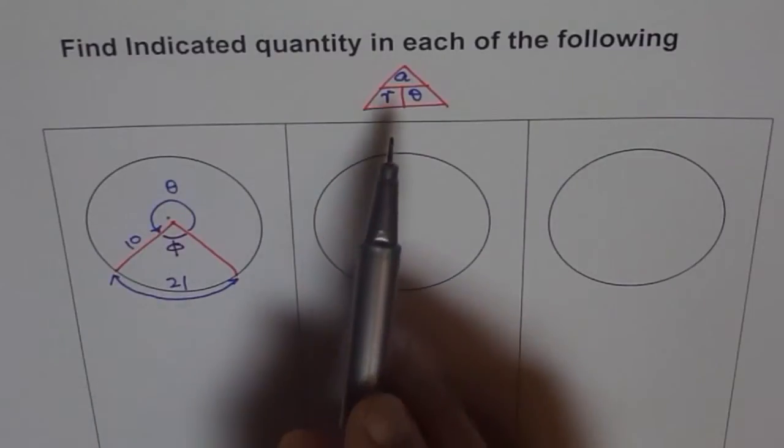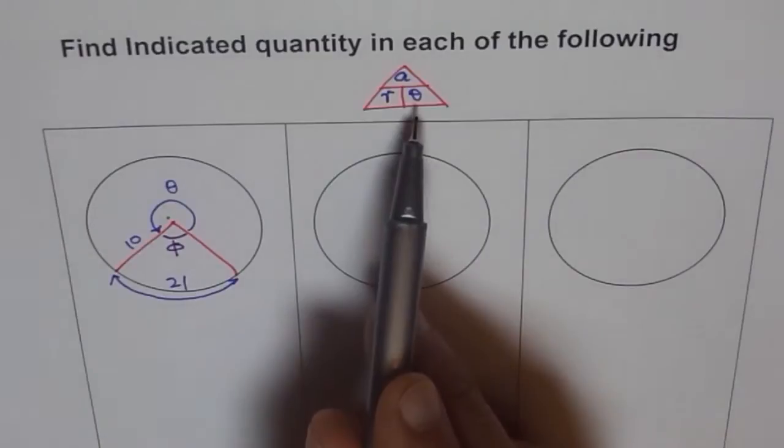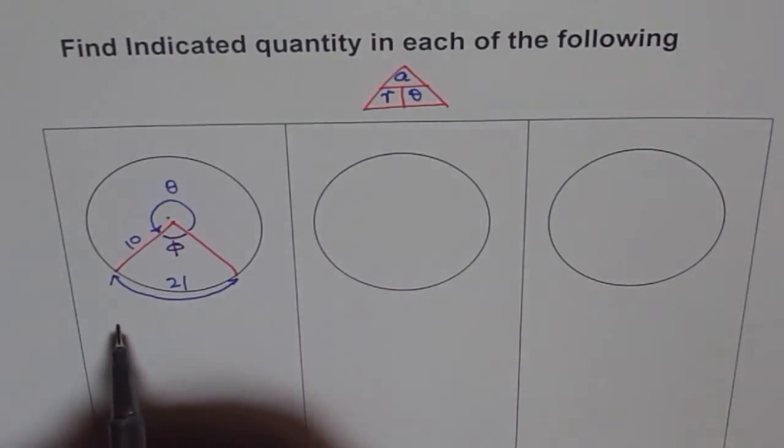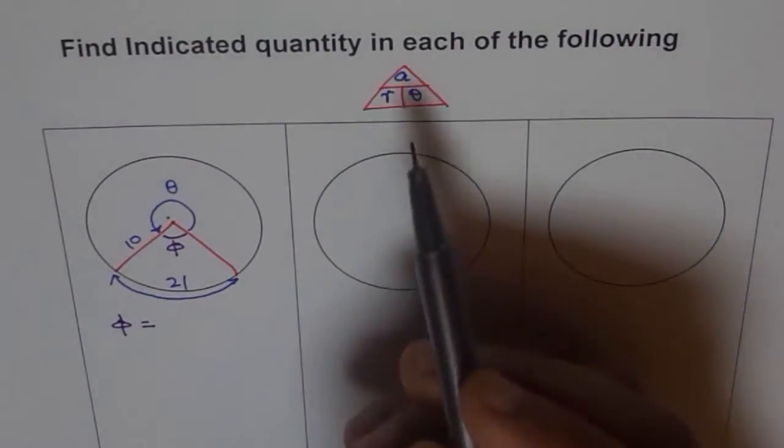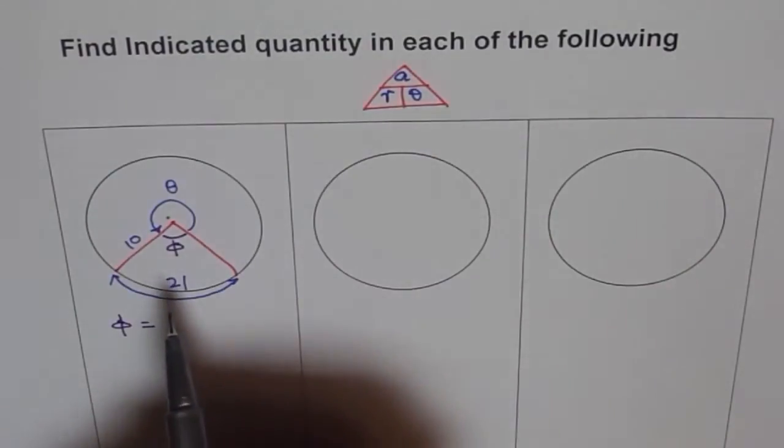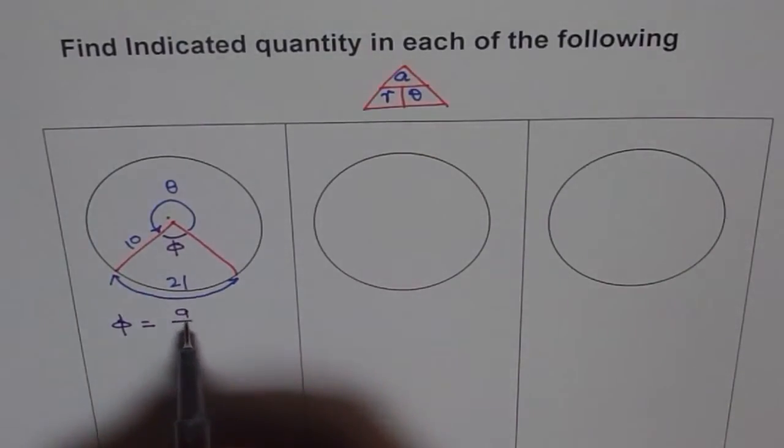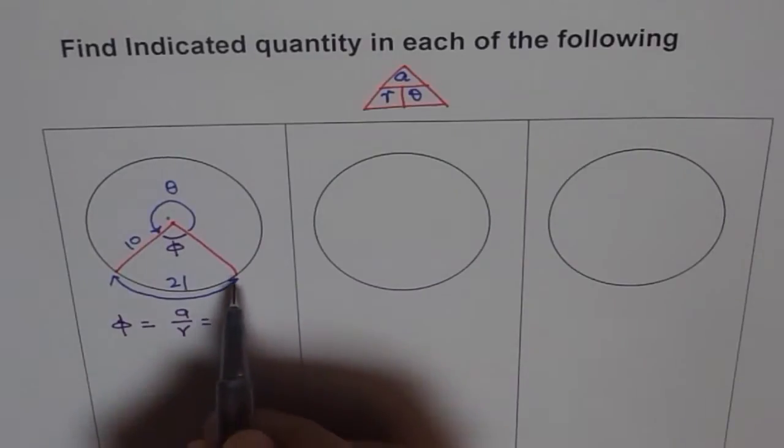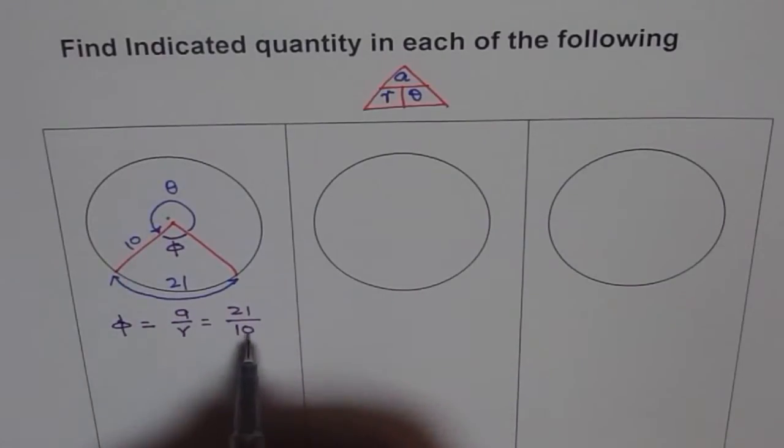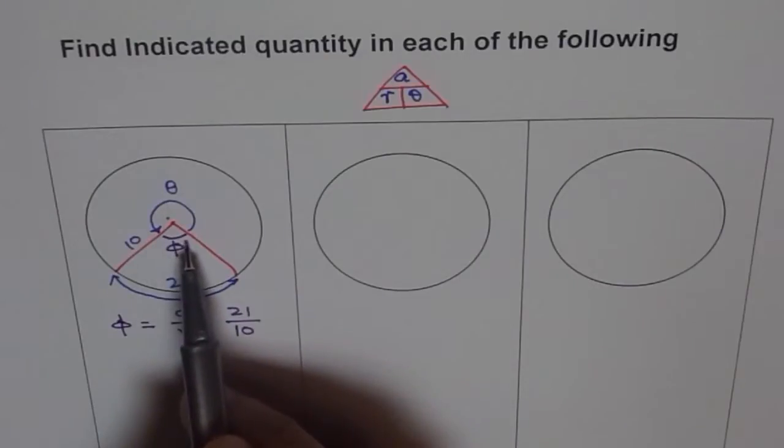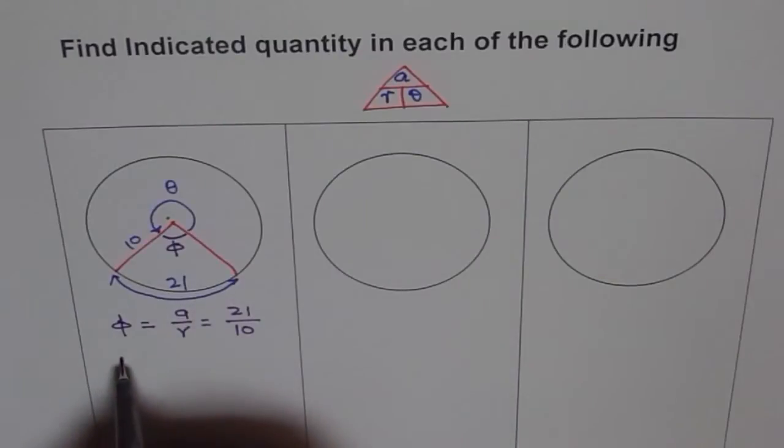So A equals to R theta. Theta equals to what? The angle here is phi. So let us say phi equals to A over R. So what is A? Let me write first. A is arc length, which is 21 in our case. And R is 10. So whatever value we get, this is in radians. But this is a central angle.